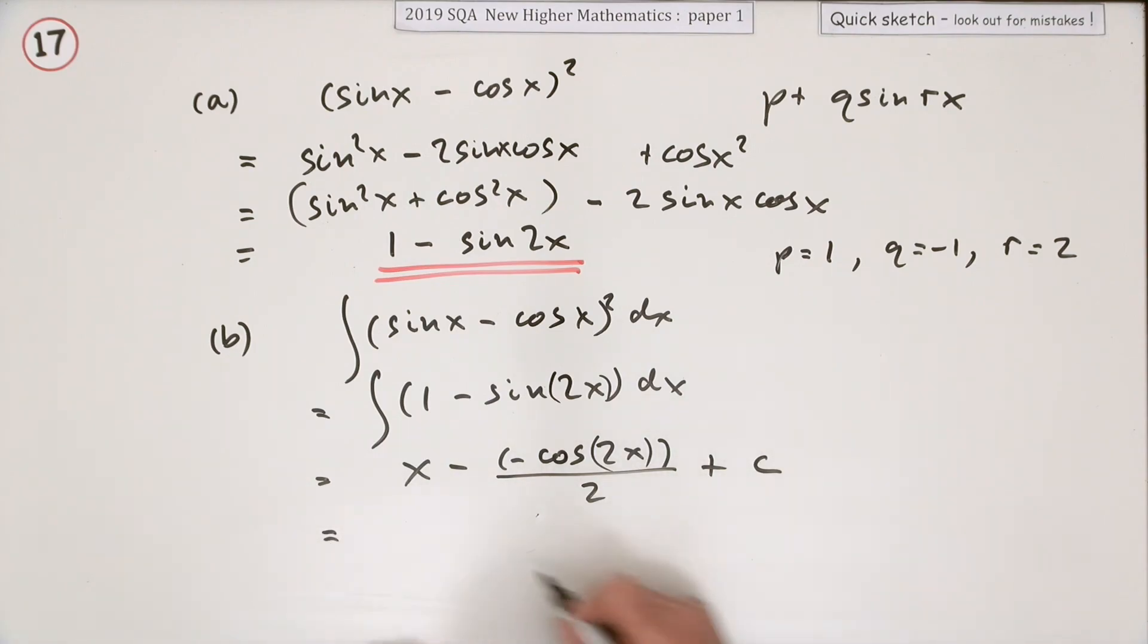I'm going to tidy it up now. So I've got x, and that'll be plus a half cos 2x plus c.